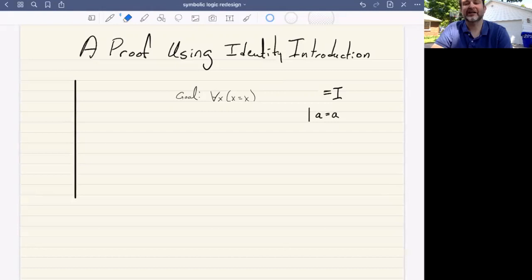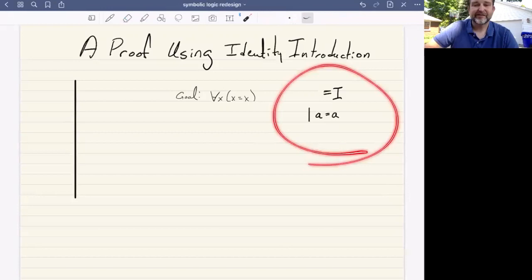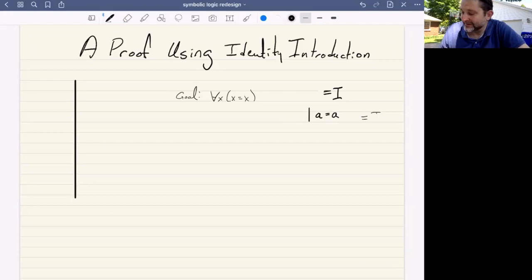This is, in a sense, a logical foundational truth of philosophy and of our system of derivation. So what we're going to say is that using identity introduction, you can assert some object A is identical to itself at any instance without citing any premise whatsoever. You will need to cite the rule, though.